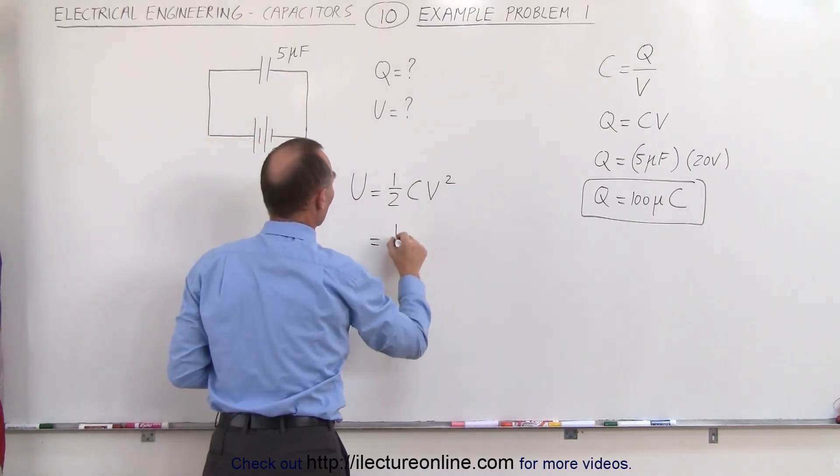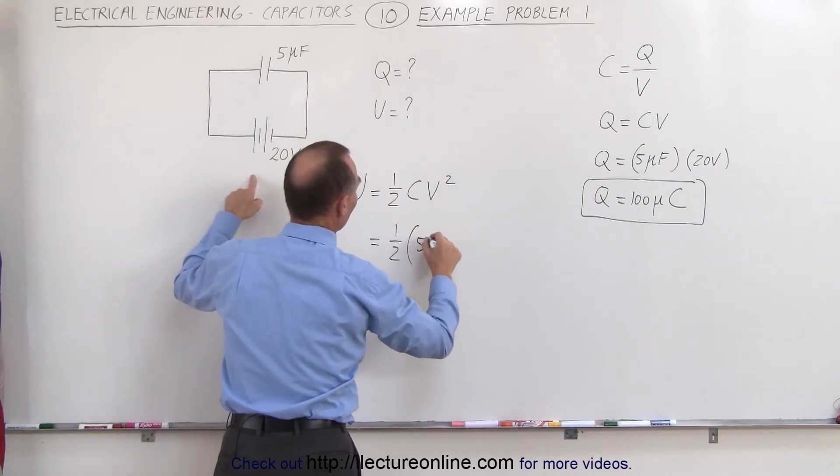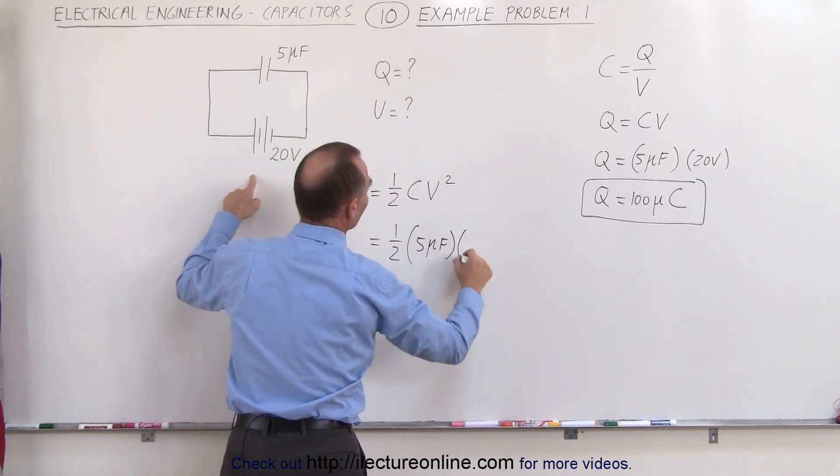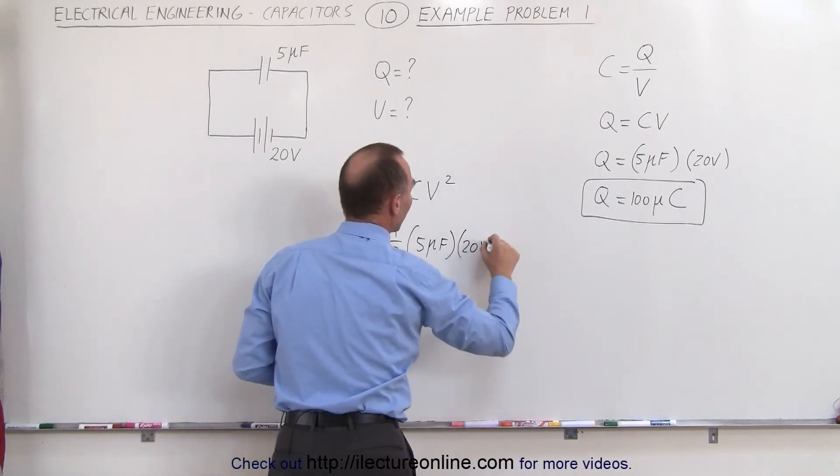Which means that this is equal to 1 half times the capacitance, 5 microfarads, times the voltage, 20 volts squared.